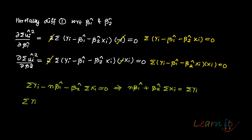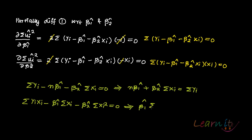For the second equation, you get: summation yi·xi minus beta1-hat·summation xi minus beta2-hat·summation xi squared equals 0. Rearranging, taking beta1-hat and beta2-hat terms to one side, gives the second normal equation: beta1-hat·summation xi plus beta2-hat·summation xi squared equals summation yi·xi.